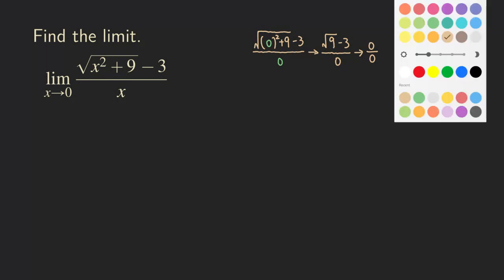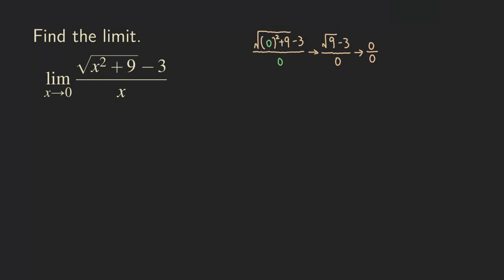So we are going to multiply the numerator and the denominator by the conjugate so that we can see if there is any factor that we can cancel out.